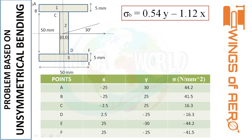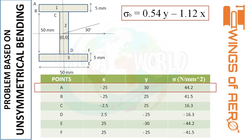Points A and B lie on the same horizontal plane, so both have x equals minus 25. For point B, the y-coordinate is 30 minus 5 equals 25 (positive, slightly below the top). Substituting these values into the stress equation gives 44.2 N/mm² for point A and 41.5 N/mm² for point B. For point C, x equals minus 2.5 and y equals 25; substituting gives 16.3 N/mm². The remaining points D, E, and F follow the same procedure. The maximum bending stress occurs at point A, giving 44.2 N/mm².